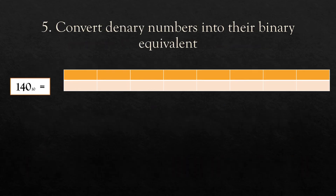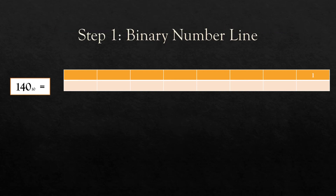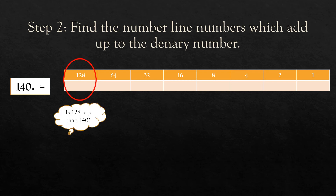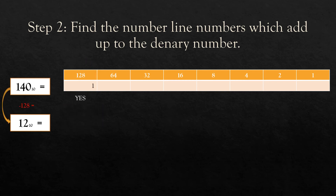Now we've come to the last part of our presentation. We're going to look at how to convert a denary number into its binary equivalent. Take the number 140 in denary, base 10. Step 1 is the same: write the binary number line — 1, 2, 4, 8, 16, 32, 64, 128. Now find which numbers from the number line add up to 140. We check: is 128 less than or equal to 140? Yes. So we put a 1 under 128 and subtract: 140 minus 128 leaves us with 12.